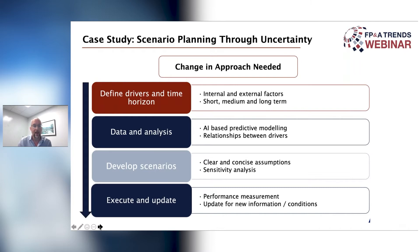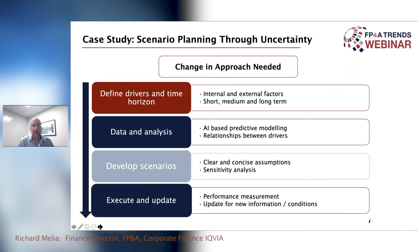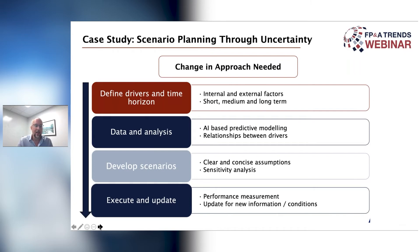The steps I'm going to talk through include reference to the pandemic, but as mentioned, these can apply more broadly. First, we needed to define the key drivers and assess the appropriate time horizons for the different scenarios. This can include internal and external factors, and the time horizon will be specific to the type of business or industry you're operating in. In our example, we were looking at drivers such as hospital site accessibility and the pandemic trajectory, with a focus on the short term over the next few quarters. We were able to utilize internal AI-based predictive modeling capabilities on areas such as the transition from on-site monitoring to virtual or decentralized trial monitoring, and how that shift impacted workforce capacity needs and pricing.